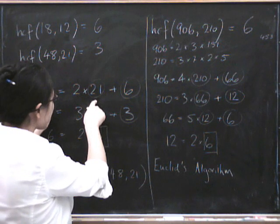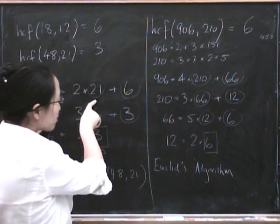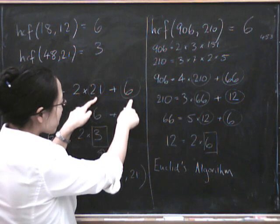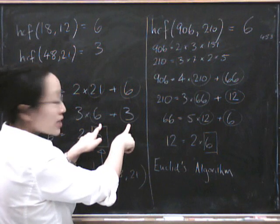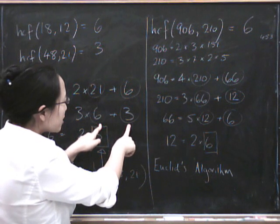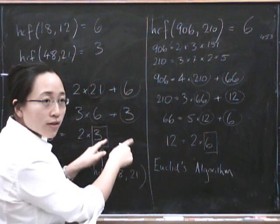So in order to find the highest common factor of 48 and 21 all I have to do is find the highest common factor of these two, and to do that all I have to do is find the highest common factor of these two. And you see as you keep going down you're making the numbers smaller and smaller that you're investigating.